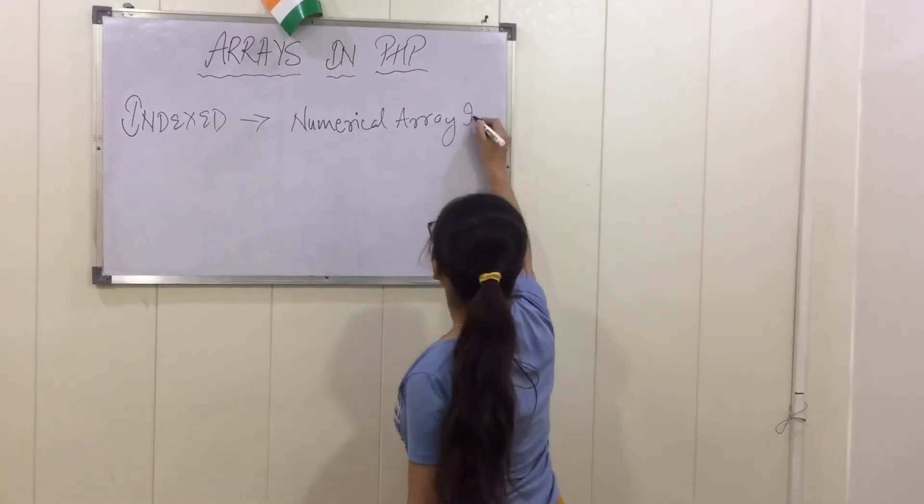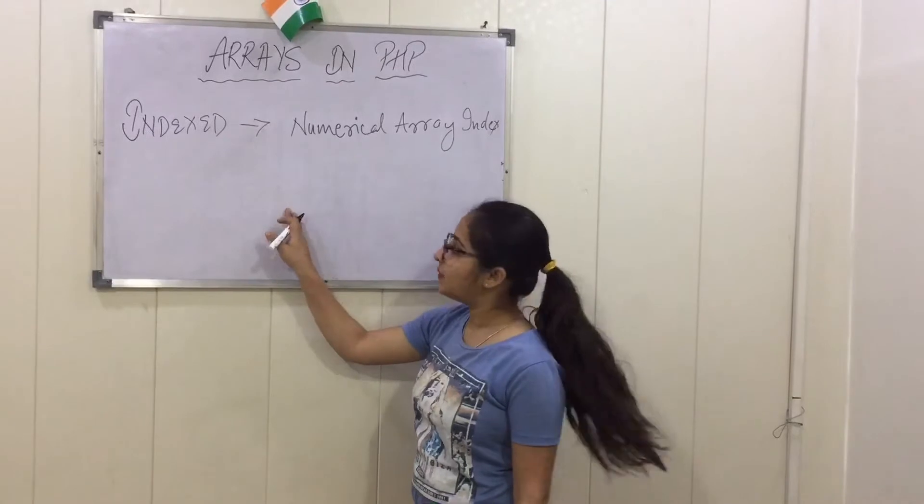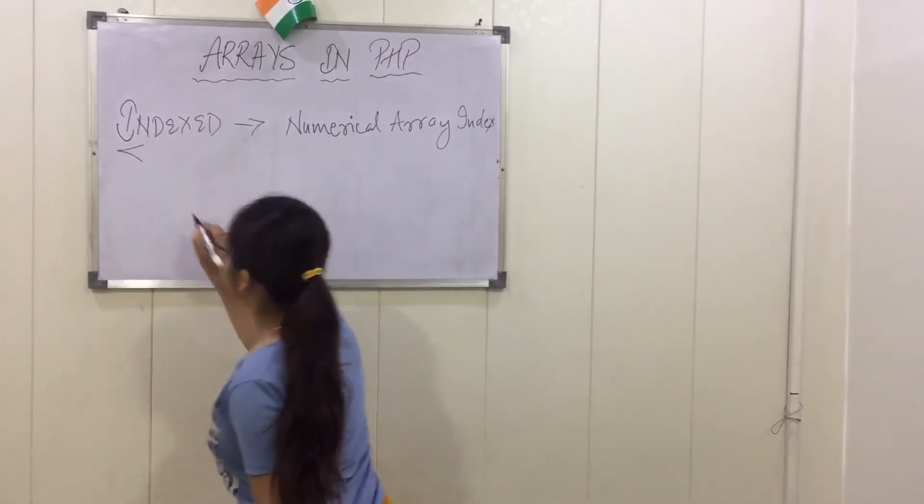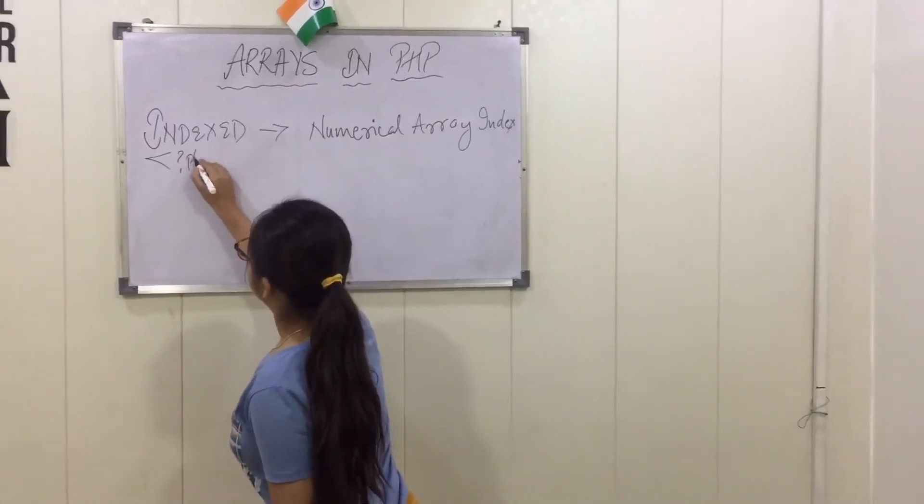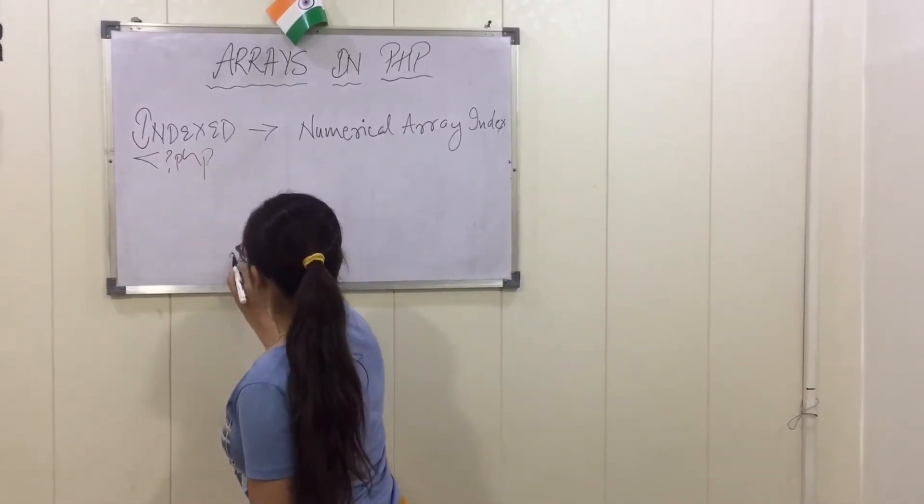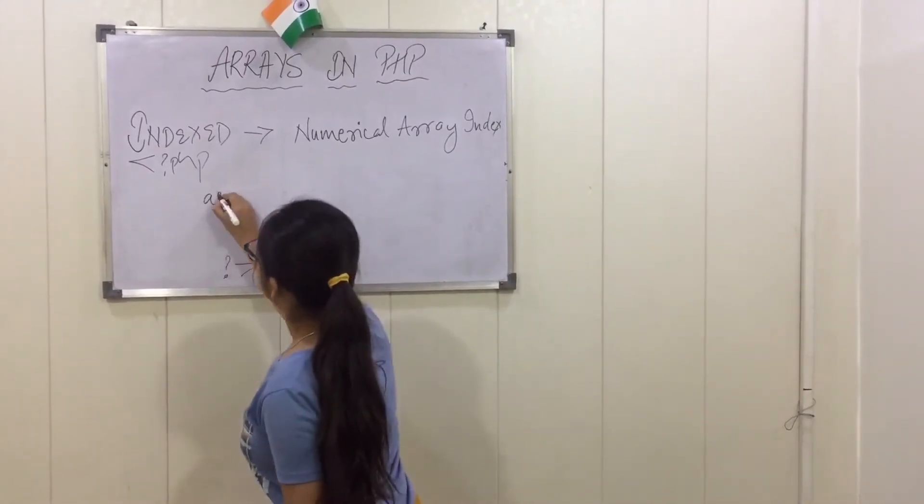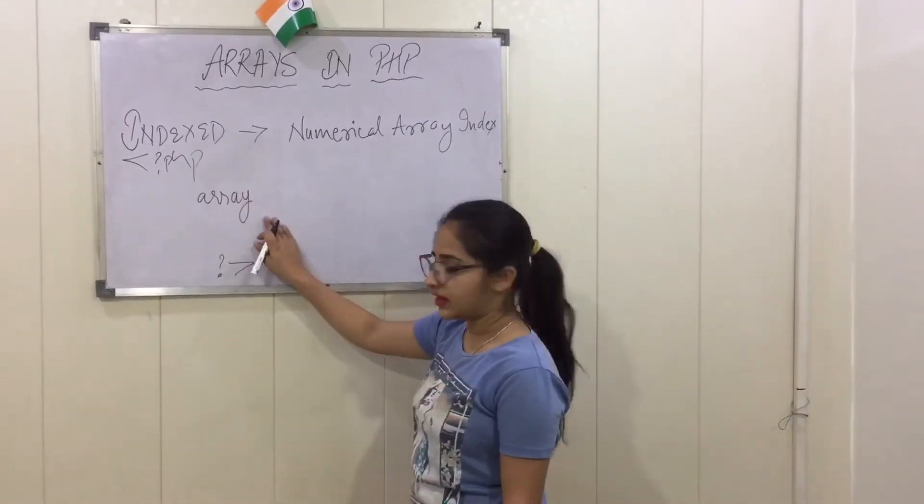Now we will discuss the example of indexed array in PHP. First of all, PHP tag starts and closes. In between this we will pass an array, like this.